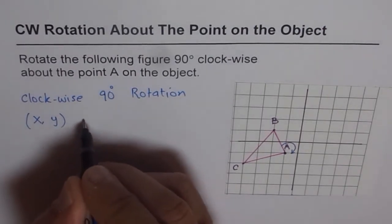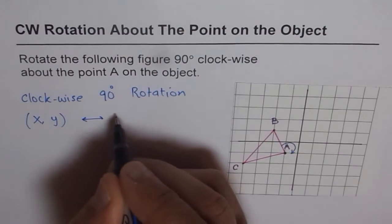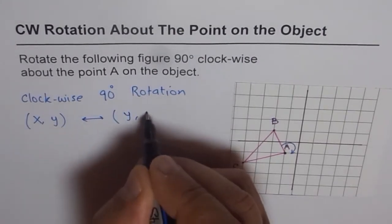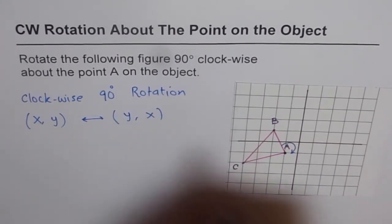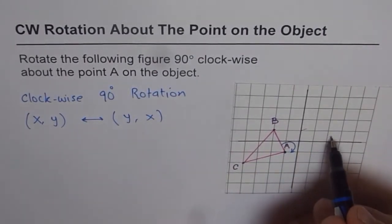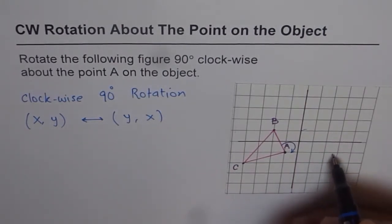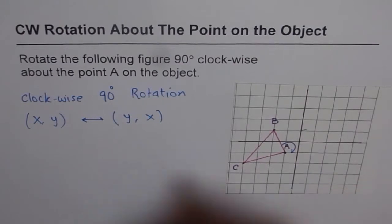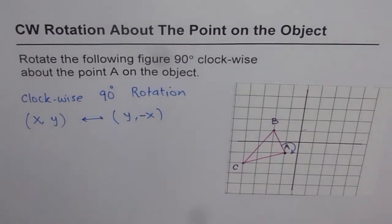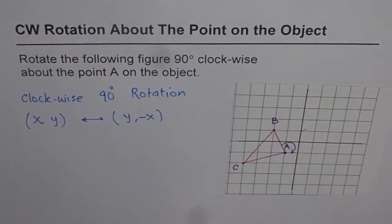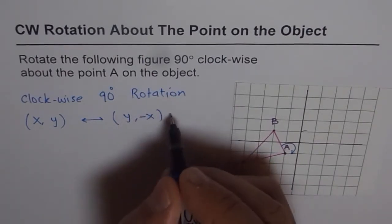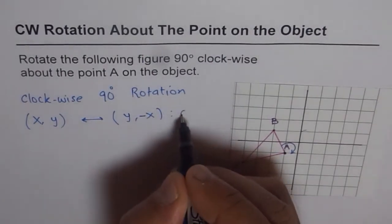x and y swap, so (x, y) changes to (y, x). But when you move from the first quadrant to the second quadrant via a 90-degree clockwise rotation, the y value becomes negative. So the transformed point is (y, −x). However, this change only takes place if you are rotating about the origin.